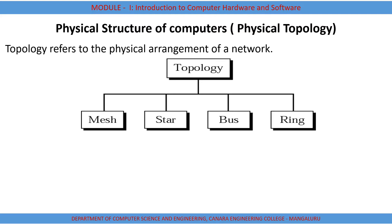Coming to topology, as already mentioned, it is the arrangement of a network — how you interconnect two or more computers in a particular area or distant area. There are four basic types: mesh topology, star topology, bus topology, and ring topology.